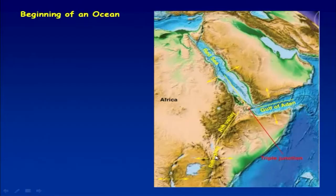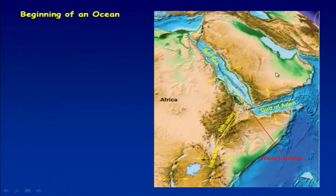Welcome back. In the previous lecture, we discussed the opening of the rift valley in the African continent and the location of the triple junction, where three plates are moving away from one another. The Arabian plate moving away from the eastern portion of the African plate is giving rise to the further opening of the Gulf of Aden, and the African plate and the Arabian plate moving away from one another are giving rise to the opening of the Red Sea.